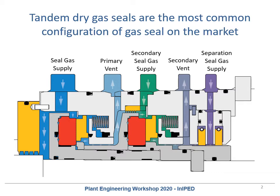On screen I'm showing a photo of a dry gas seal and there are a couple of key components I'd like to highlight. The first are those large red rings in the middle, called the mating rings. These are the rotating component of the dry gas seal. They are affixed to the shaft and these are the rings that have those spiral grooves on them that everyone's heard so much about.